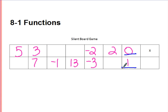This one was kind of tricky because it was a two-step silent board game. The easiest one for me to start with is the 3 and the 7. I first tried adding 4. 3 plus 4 is 7, but negative 2 plus 4 is not negative 3. So I know I'm going to have to multiply and then maybe add or subtract.